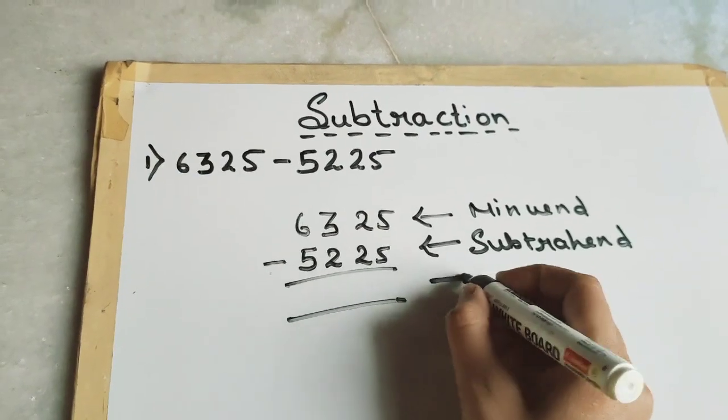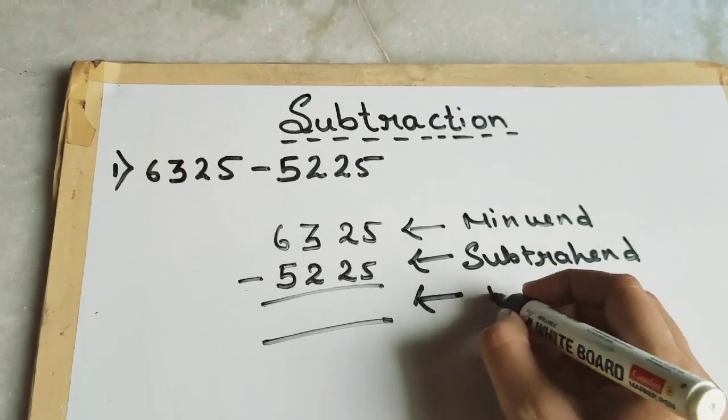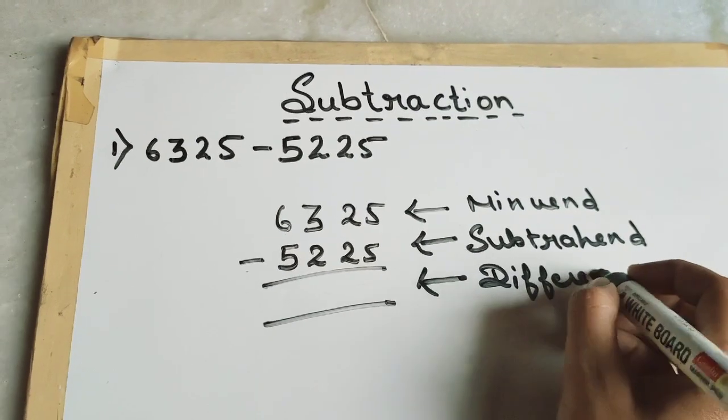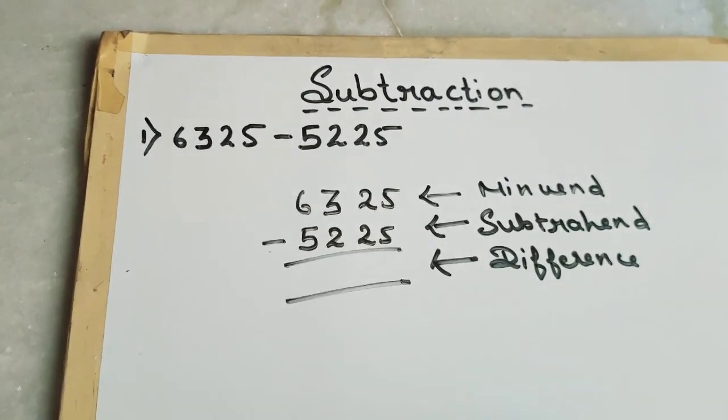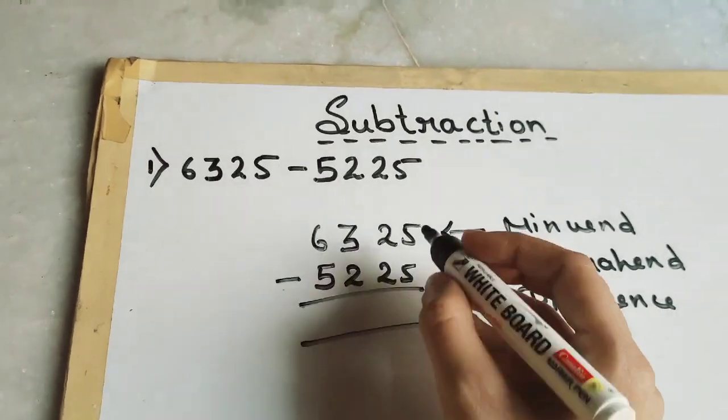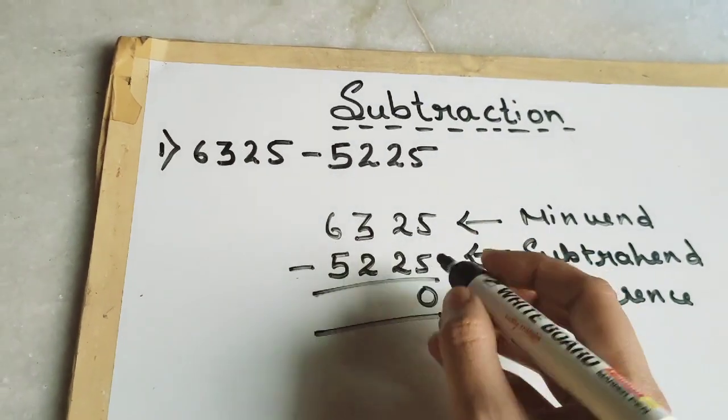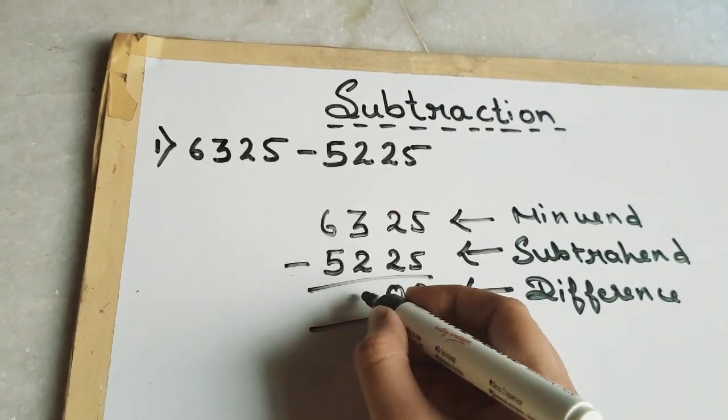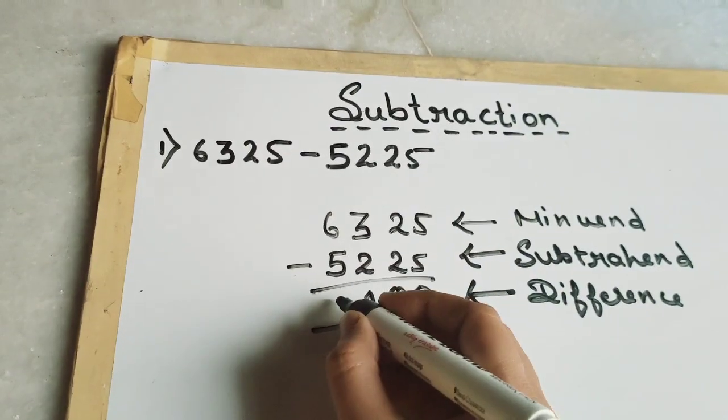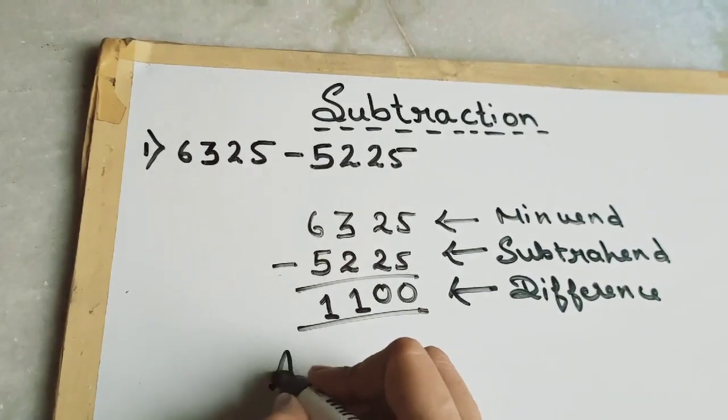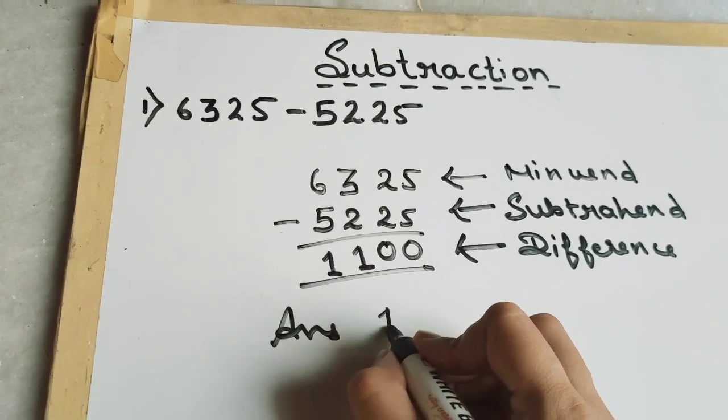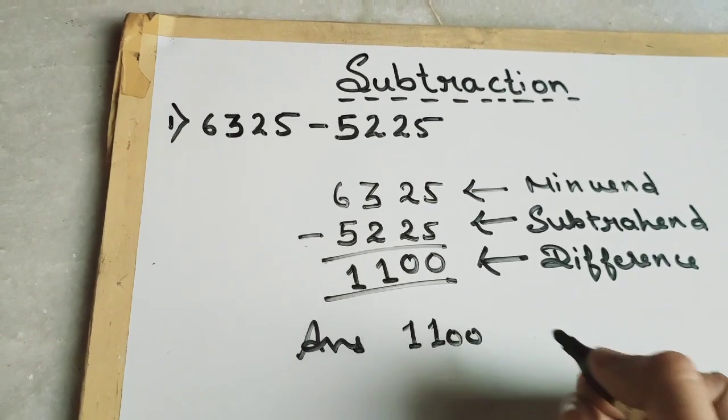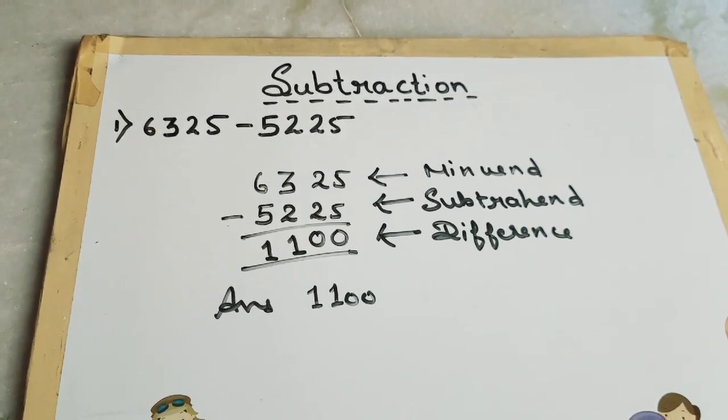And the answer which we will get is called the difference. Now let's subtract: 5 minus 5 is 0, 2 minus 2 is 0, 3 minus 2 is 1, 6 minus 5 is 1. So we got the answer, 1100.